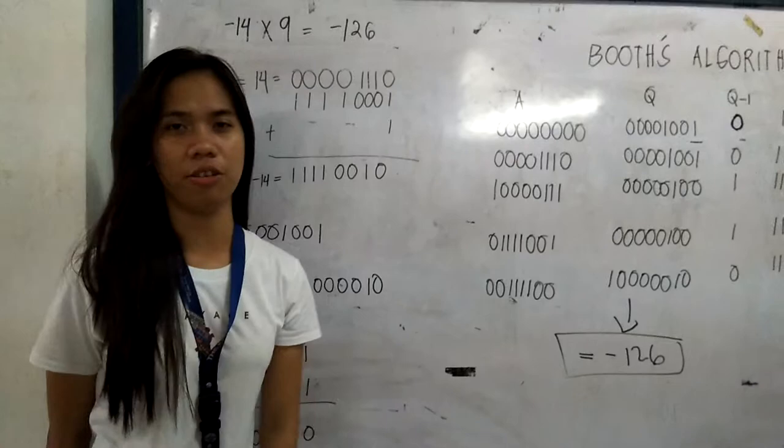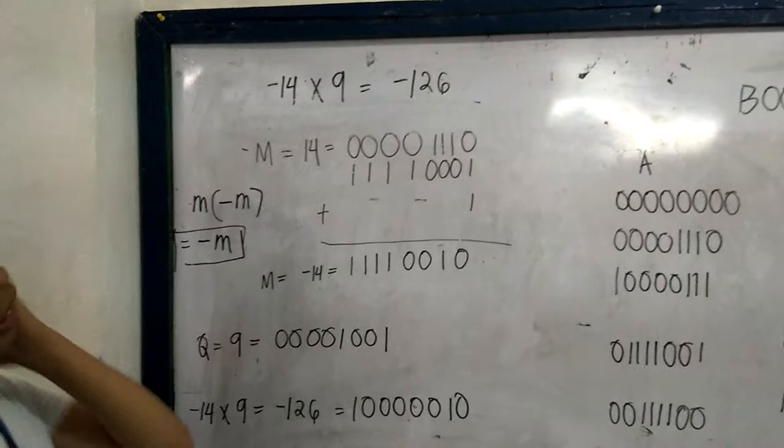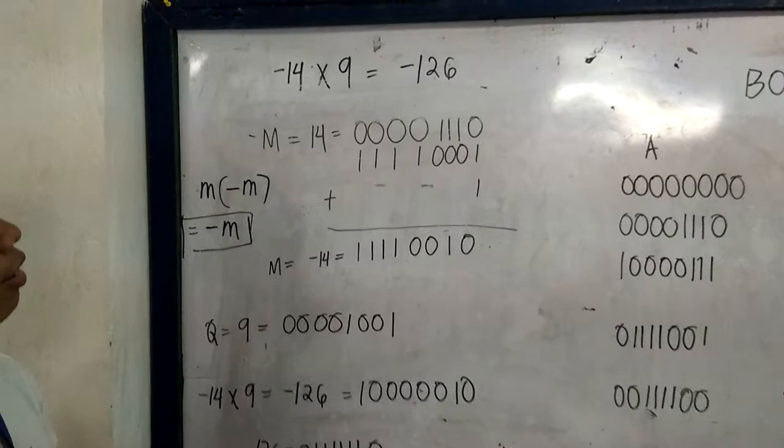Hi, I'm Michelle Lissendiga and I'm with my partner Mark Avelian. We are going to demonstrate negative 14 times 9 using Booth's algorithm in the decimal number system. Negative 14 times 9 will result to negative 126.